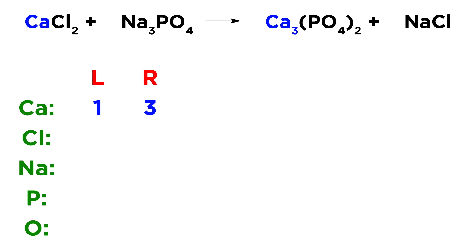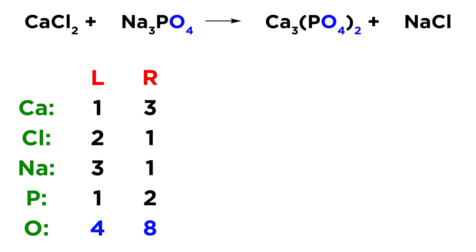We have one calcium atom on the left and three calcium atoms on the right. For chlorine, we have two on the left because we have Cl2, and on the right we have just one in NaCl. For sodium, we have three on the left and one on the right. For phosphorus, we have one on the left and two on the right — don't forget that with PO4 in parentheses and a two outside, that means there are two phosphate polyatomic ions, so PO4 twice, giving two phosphorus atoms. For oxygen, on the left we have four, and on the right we have eight because PO4 appears twice, giving O4 and another O4 — that's eight oxygen atoms.